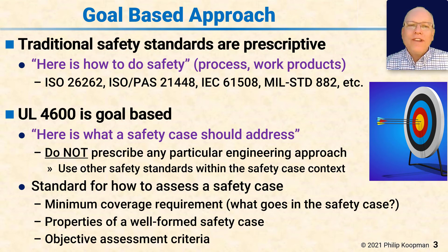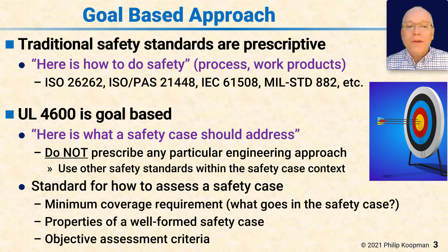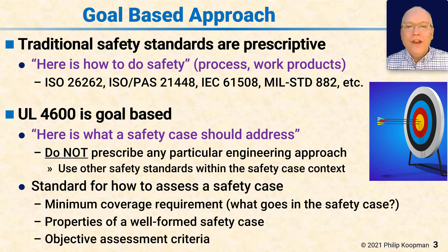That makes 4600 a standard on how to assess a safety case. In other words, what the minimum coverage requirement is to have a complete enough safety case, although probably you want to do more depending on your system. The properties of a well-formed safety case, such as making sure that all the evidence traces up to goals and the other way around, and independent assessment criteria, so that an independent person can come in and know that your safety case is well-formed.